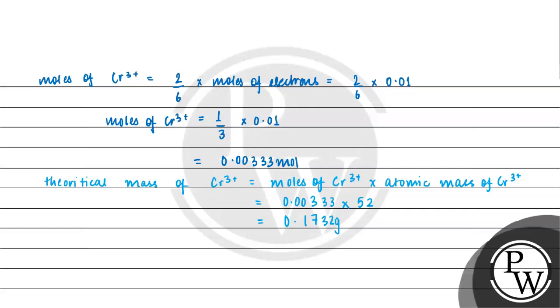Now, let us calculate the efficiency. We already discussed the formula. Efficiency in percentage = actual mass ÷ theoretical mass × 100. The actual mass given in the question is 0.104 divided by the theoretical mass 0.1732, multiplied by 100.